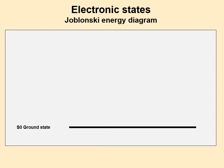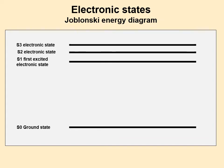So when we quantize energy, we go to an energy diagram. We'll start with the ground state — most molecules at room temperature are in the ground state. We're going to draw the first excited electronic state, a line higher up because it takes energy to get to it. There's also a second, third, and so on.